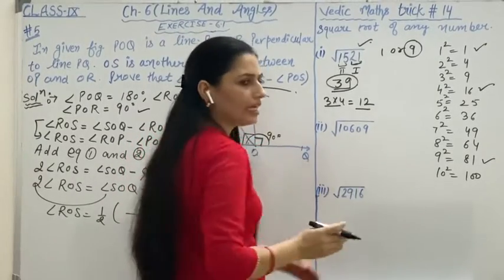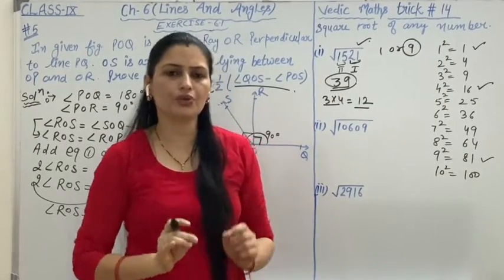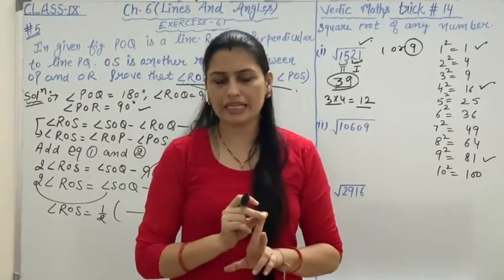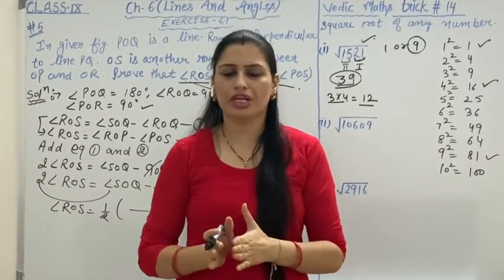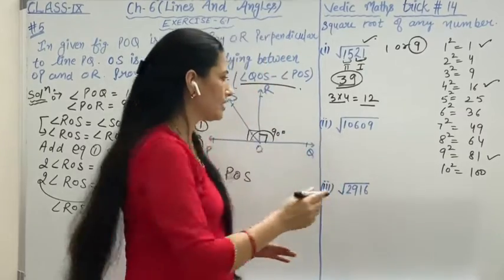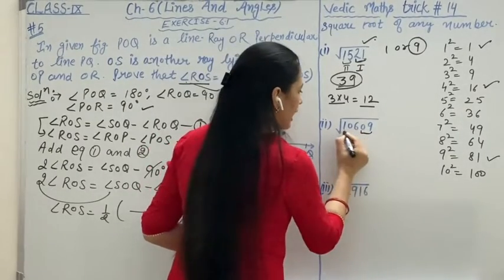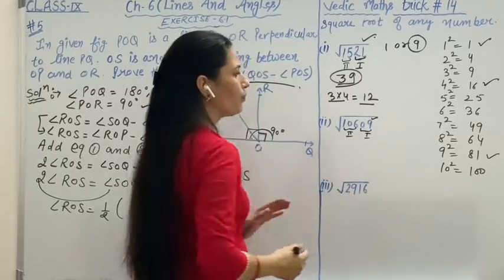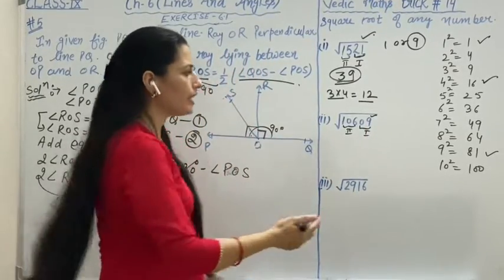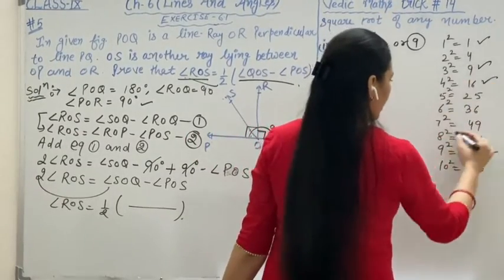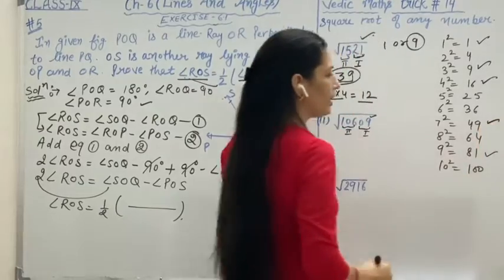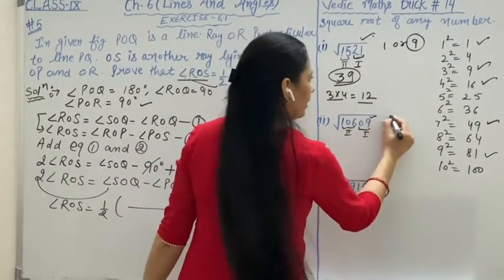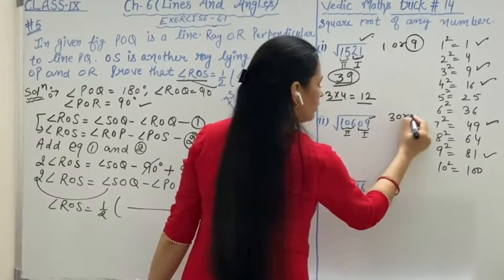Next example, that is 10609. In the same way, first you divide this number into 2 parts. In the first part you take the last 2 digits and the remaining portion is your second part. This is the first part and this is the second part. In the last we have 9. You can see 9 is 3 squared equals 9 and 7 squared equals 49, which has last digit 9.